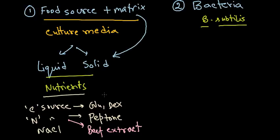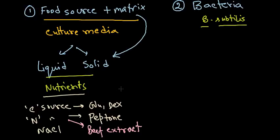Simple media can sustain the growth of many different varieties of microorganisms. But sometimes we need to grow special or pathogenic microorganisms, and in those cases we use specialized media. There are differential media, which differentiate between different types of bacteria, and there are enriched media, which are enriched with special nutrients like blood that certain bacteria require to grow.